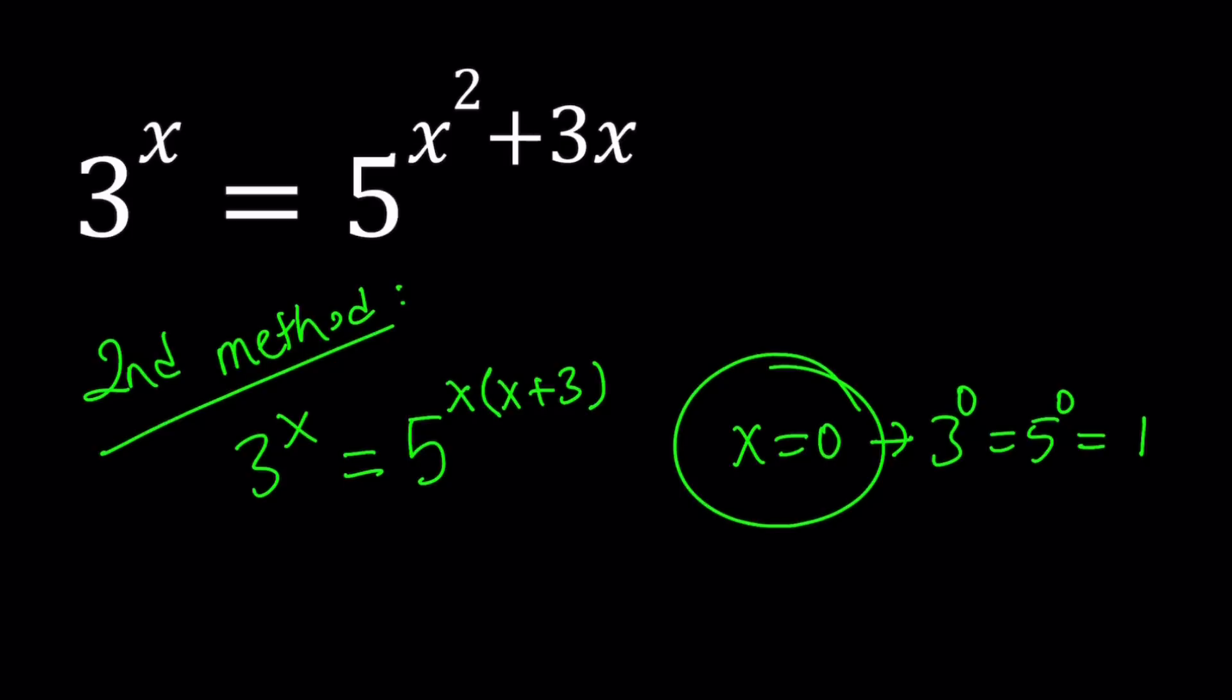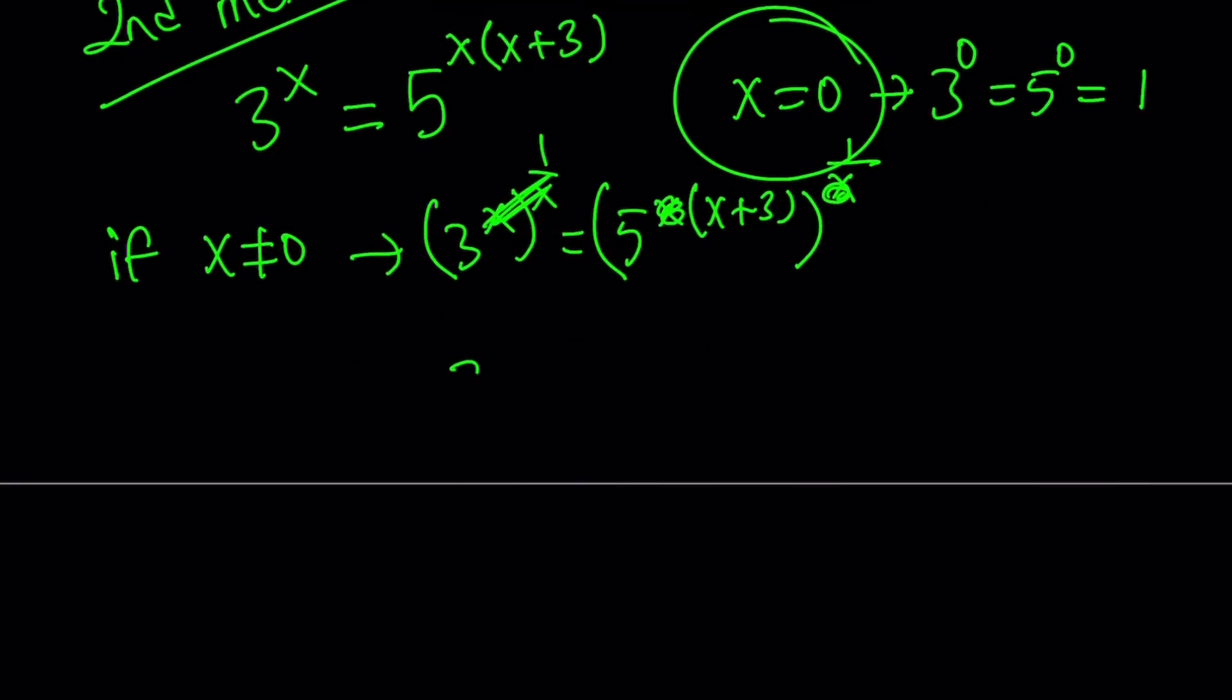Alright, so let's assume that x does not equal 0. If x does not equal 0, then we can do the following. Raise both sides to the power 1/x, right? And that's actually going to be helpful. We're going to get rid of x, in other words. You can definitely just cancel out the x's, even though it's not very rigorous or technical. But it's the same thing. x cancels out. And we end up with 3^1, which is 3,